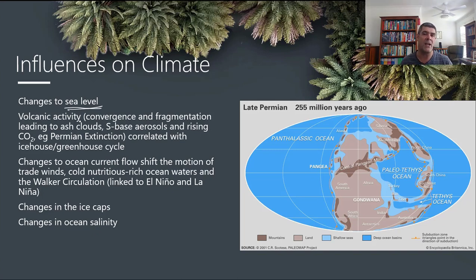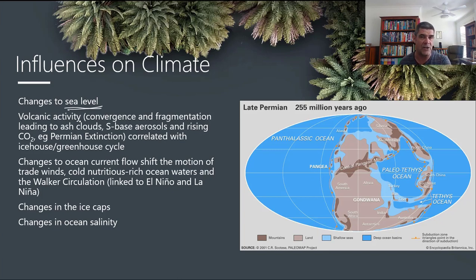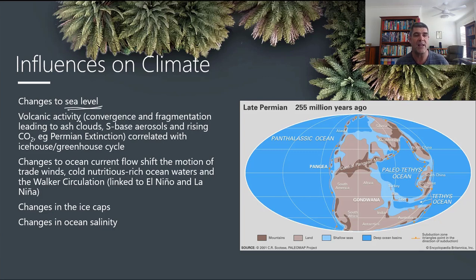There seems to be significant volcanic activity potentially associated with the Permian extinction, which we will look at later in this module — and there could be a link between that large-scale extinction of many species and significant volcanic activity. When we look at the age of granite formations in particular, there is a notable correlation between those major volcanic events and the greenhouse-icehouse cycles.